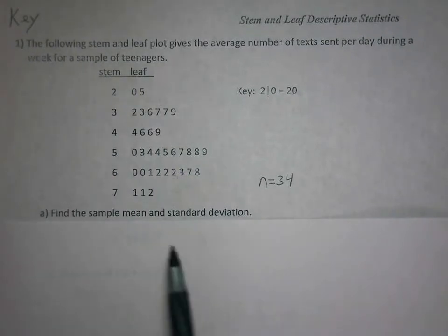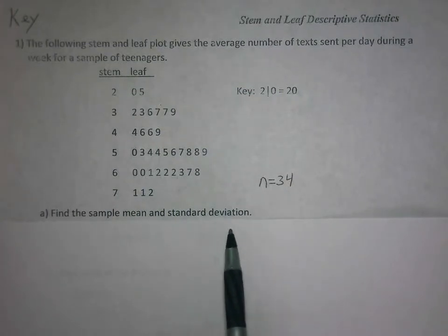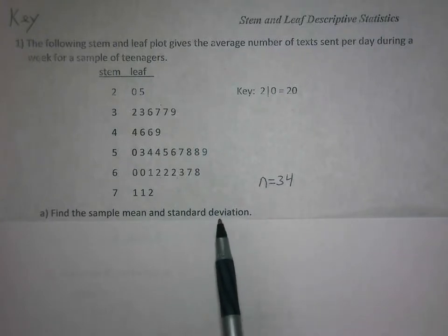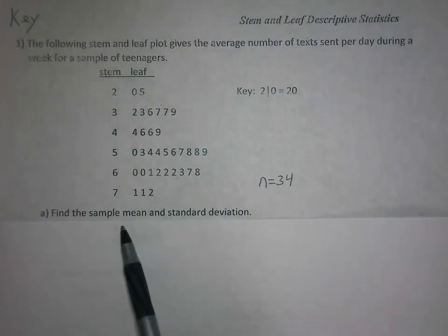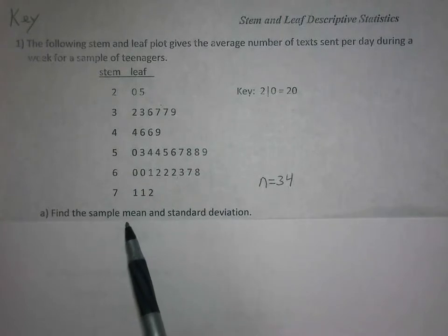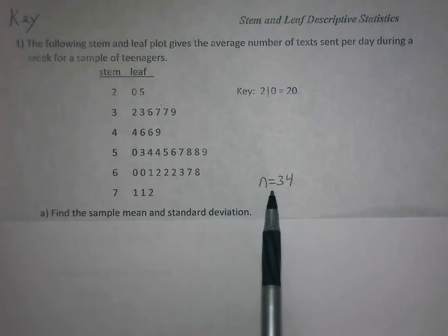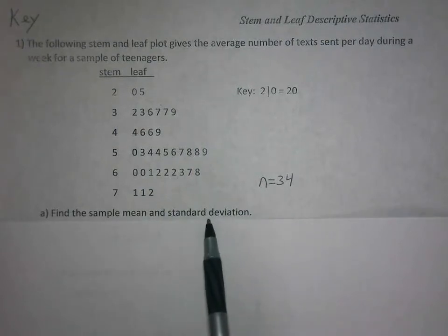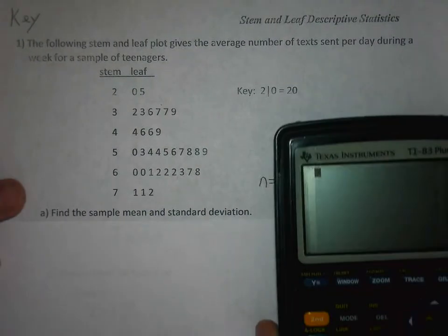If we want to calculate the sample mean and the standard deviation, doing this by hand would be very tedious, especially for the standard deviation. The sample mean you could find by adding up the 34 data values and dividing by 34, so you could do that by hand, but it's time-consuming. For the standard deviation you're going to want to use your calculator.